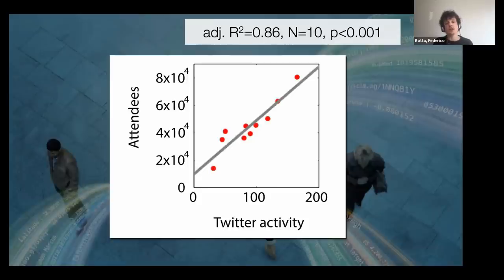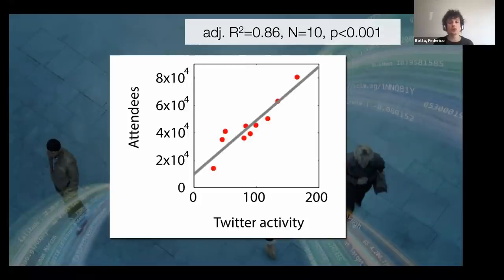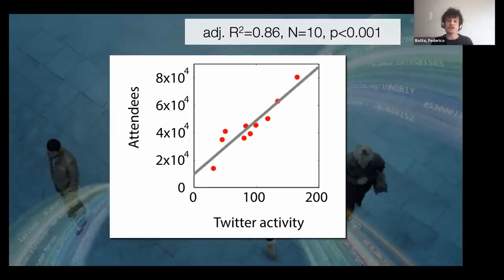So this was our initial study showing we can estimate reasonably accurately the number of people attending a large event like a football match. Crucially, if access to this data were available in real time to event organizers, authorities, or emergency services, these estimates can be generated close to real time — which would be particularly important in situations requiring quick crowd size estimates.